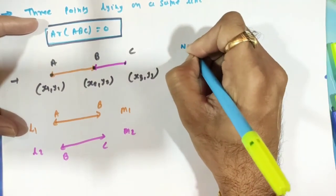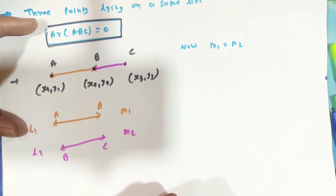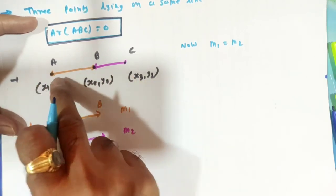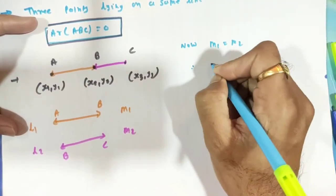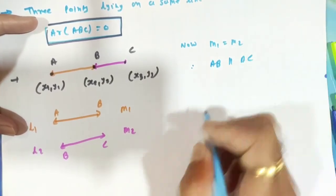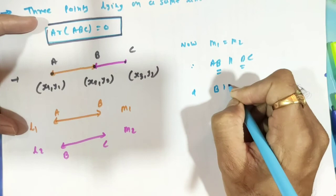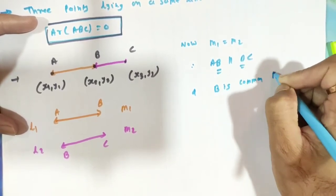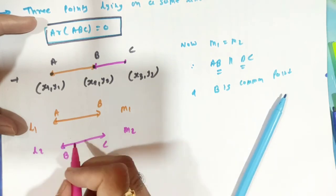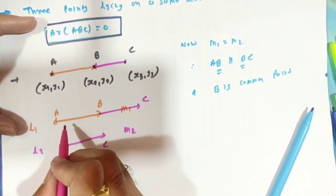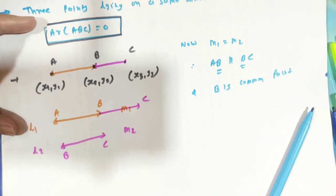If M1 = M2, the slopes of the two lines are equal, meaning lines AB and BC are parallel. But since point B is a common point between the two lines, they must coincide — therefore A, B, C lie on a single straight line, and we can say these three points are collinear.